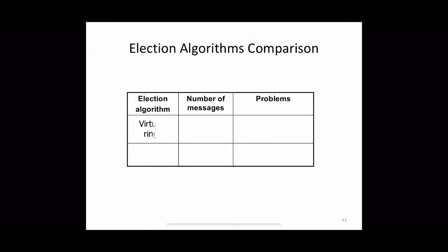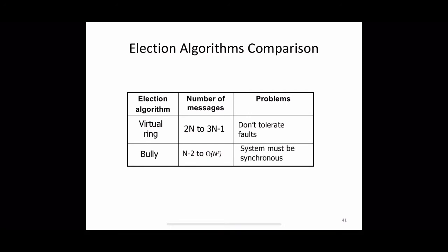Analyzing the performance of the bully algorithm: in the best case, the process with the second highest identifier notices the coordinator's failure, and it can immediately elect itself as the new coordinator by sending just n-2 coordinator messages. In the worst case, when the process with the lowest identifier first detects the coordinator's failure, all n-1 processes begin an election, each sending messages to processes with higher identifiers, requiring on the order of n² messages. So the message complexity ranges from n-2 to O(n²). The system must always be synchronous to detect coordinator failure.